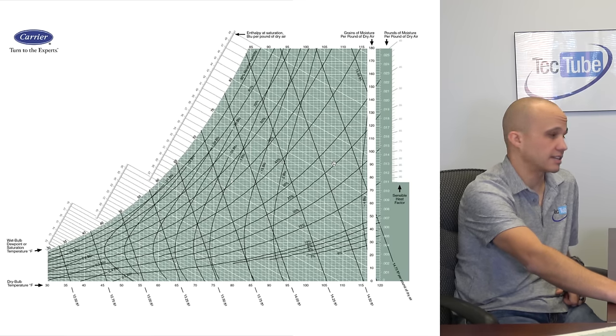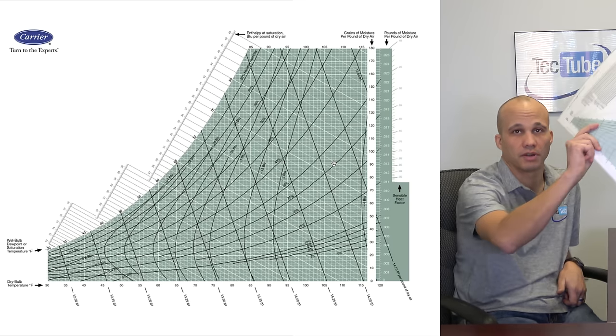So we're going to pull up the psychrometric chart on the computer here. So it'll be a little bit easier for us to see what's going on. So this is our typical psychrometric chart. It's actually almost the exact same one I just showed you a minute ago.